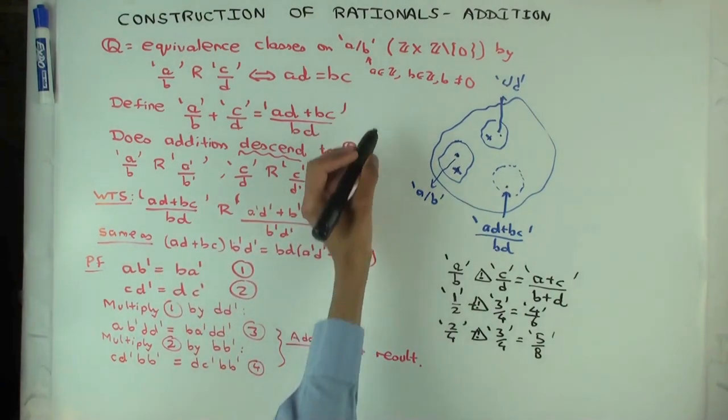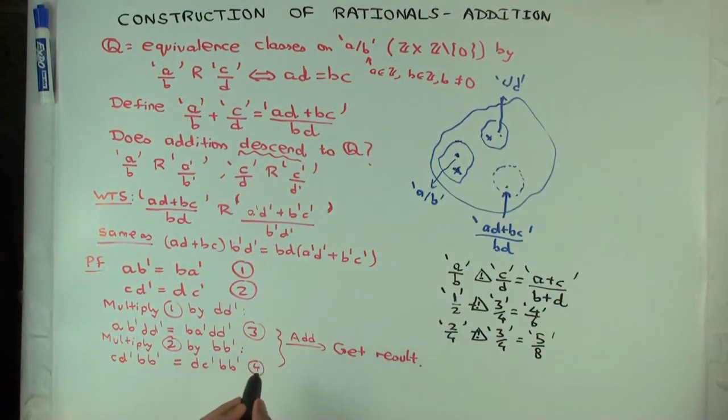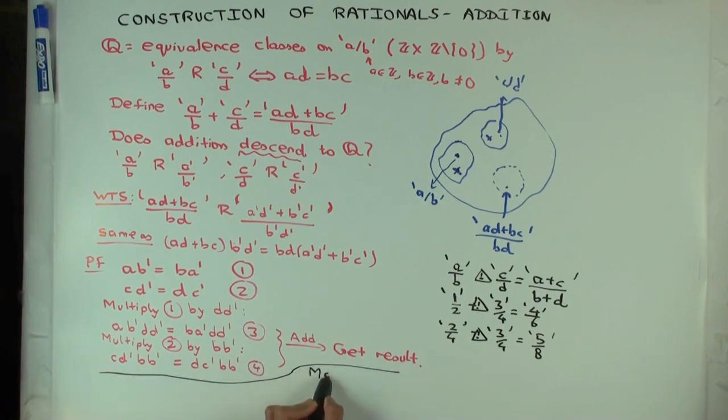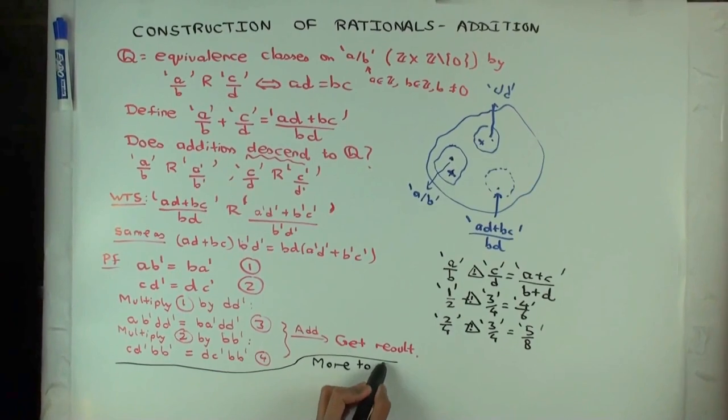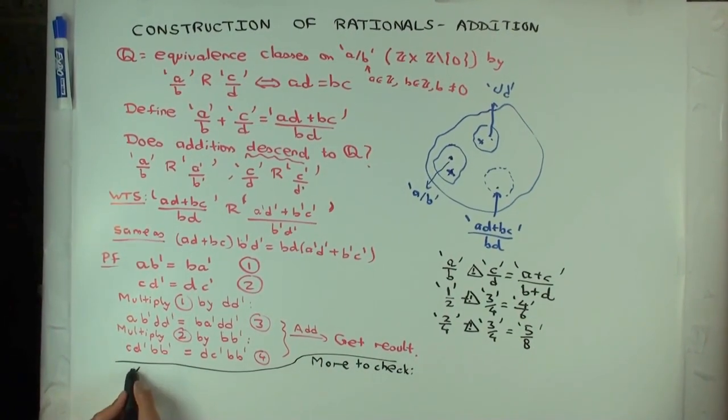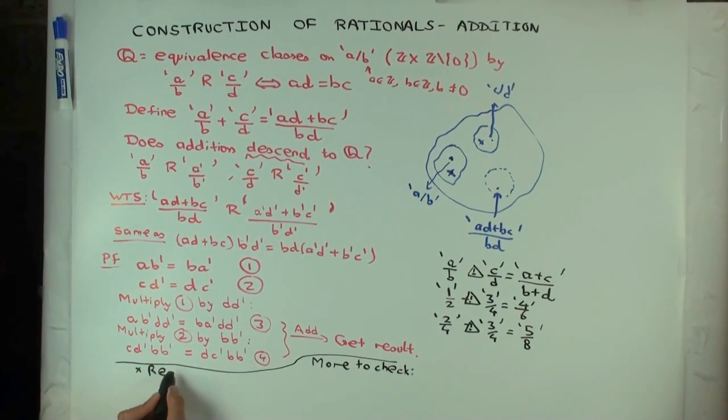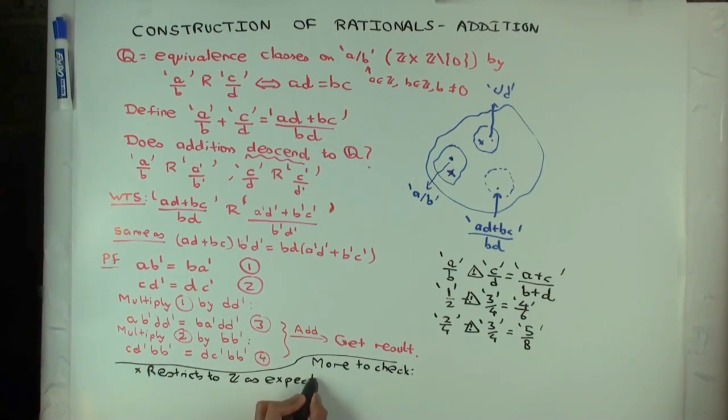Additional things to check. So restricts to integers as expected. Otherwise, it conflicts with our original notion of addition, which is bad. What else do we need to check?